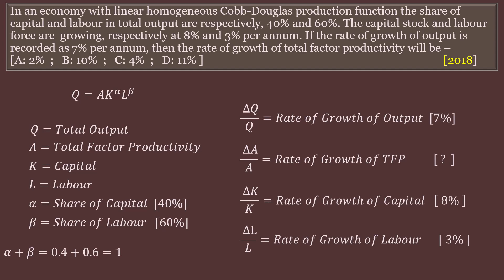Let us understand what each letter stands for: Q is total output, A is total factor productivity, K is capital, L is labour, alpha is the share of capital — 40% as given in the problem, and beta is the share of labour. It is a linear homogeneous function, meaning alpha plus beta equals 1. Alpha is 0.4 and beta is 0.6, and their sum equals 1, confirming it is a linear homogeneous production function.